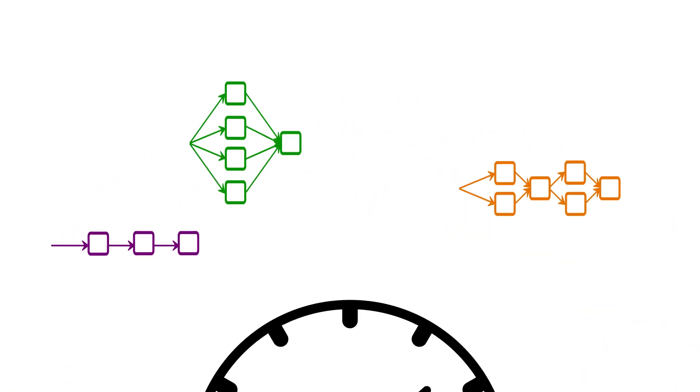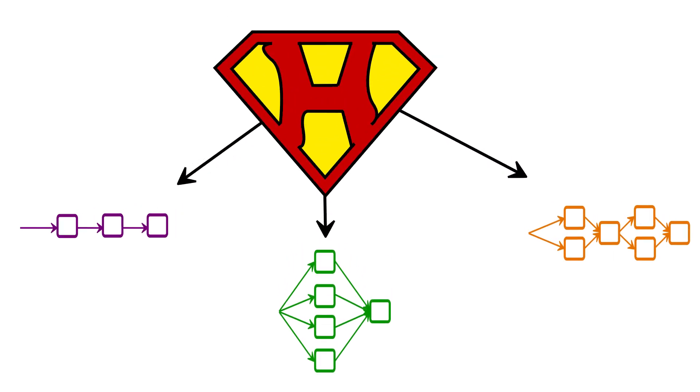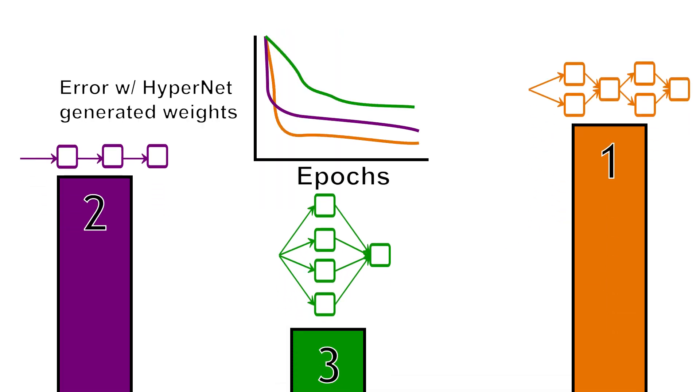Rather than fully training then evaluating a set of architectures, I use an auxiliary model called a hypernet that learns to dynamically generate the weights for a wide range of network structures, allowing us to rapidly compare the relative performance of each net at the cost of a single training run.